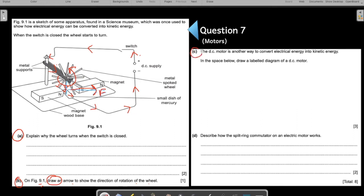Now let us come to the C part of the question. The DC motor is another way to convert electrical energy into kinetic energy. In the space below, draw a label diagram for the DC motor. Three marks question. Draw a complete label diagram. So this is also one thing that you need to practice - to draw the label diagram of a DC motor.